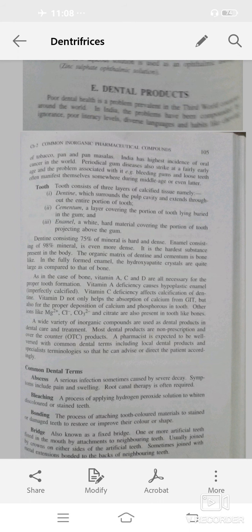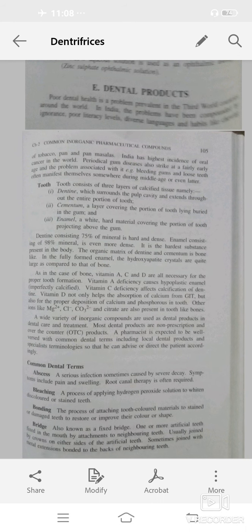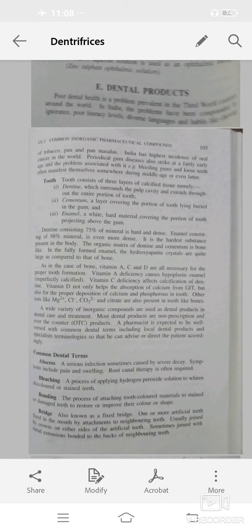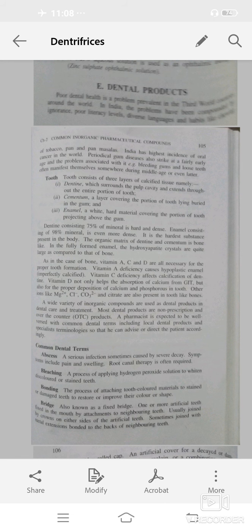Calcium is required for growth of teeth. Vitamins A, C, and D are all necessary for proper tooth formation. Vitamin A deficiency causes hypoplastic enamel affecting the outer layer of the tooth. Vitamin C affects calcification of dentin. Vitamin D not only helps the absorption of calcium from GIT but also proper deposition of calcium and phosphorus in tooth.